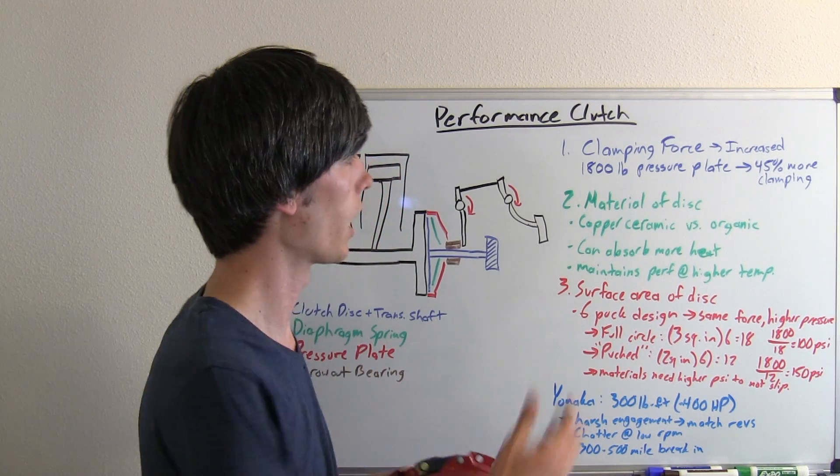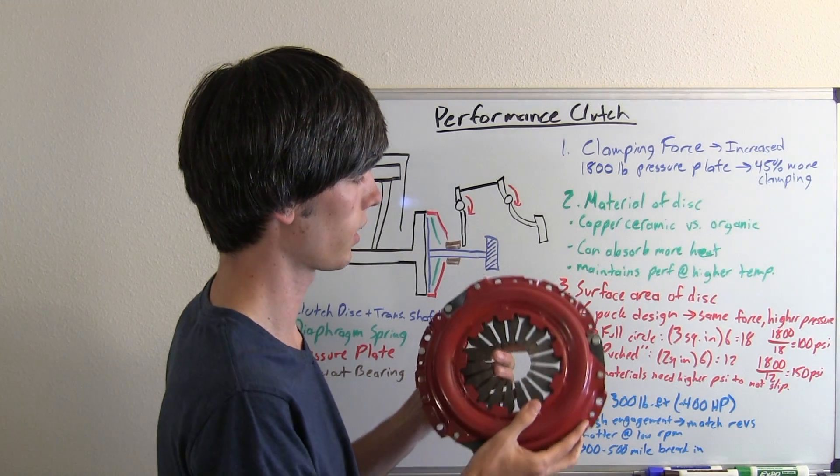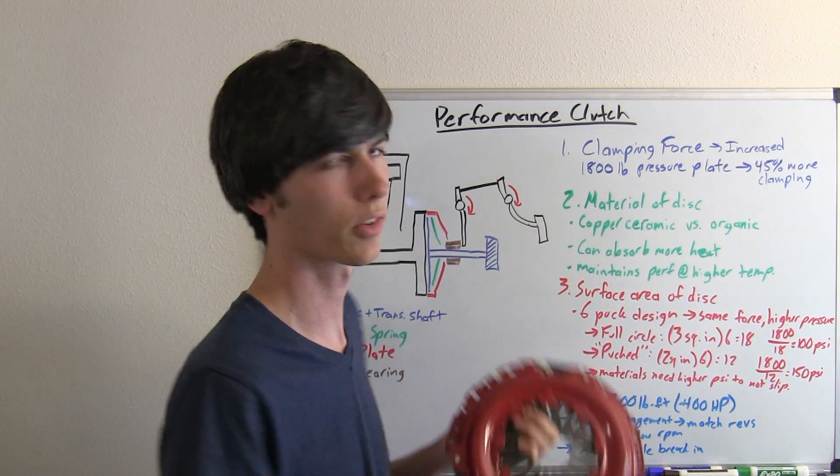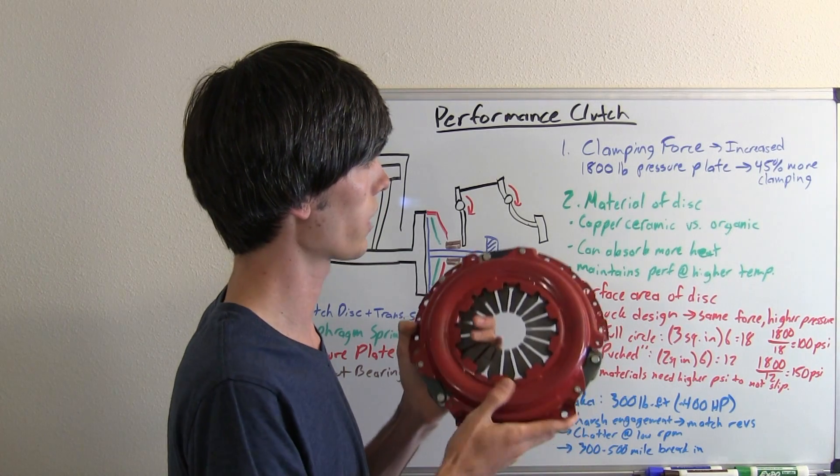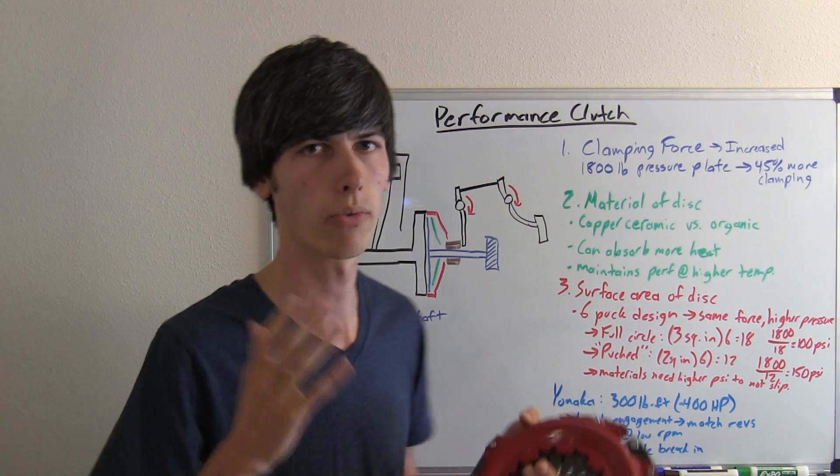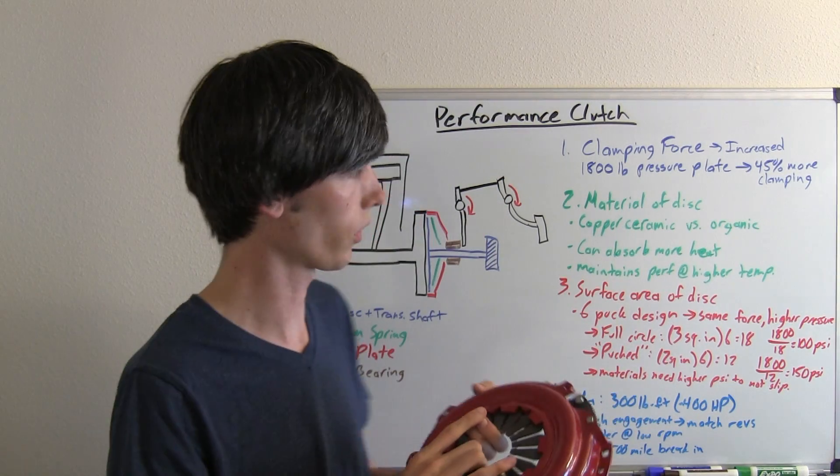So you may want to check that out. But basically this has a 1800 pound pressure plate and that's about 45% more clamping force than the OEM style clutch. So that's going to give you about 45% more torque that you can transfer through it.